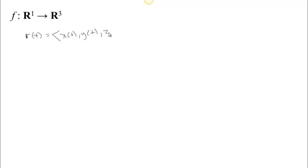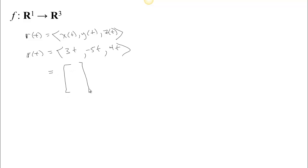Now let's consider a vector-valued function of a scalar with three outputs. Think of the scalar as time — one input t — and three outputs representing a location in 3D space, creating some kind of curve. A linear example: r of t equals (3t, −5t, 4t). We can write that as a column vector, or as the matrix [3, −5, 4] times the scalar t. That's its matrix form.